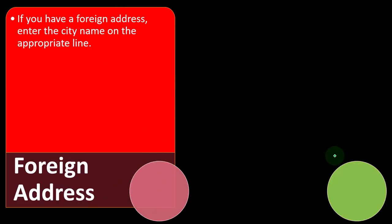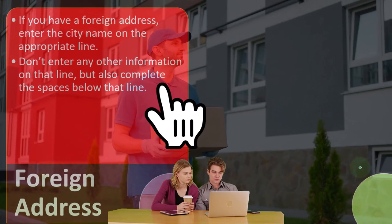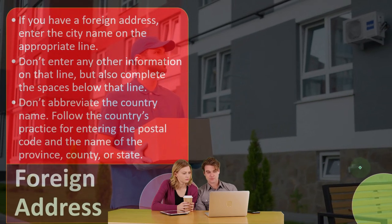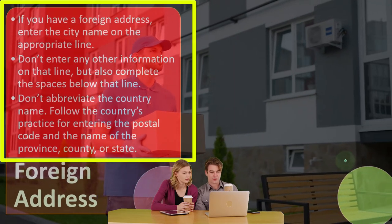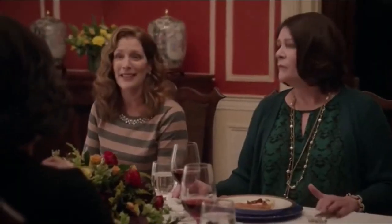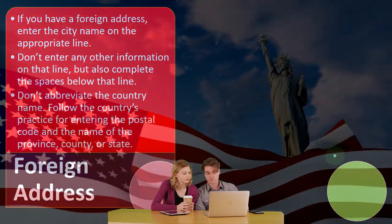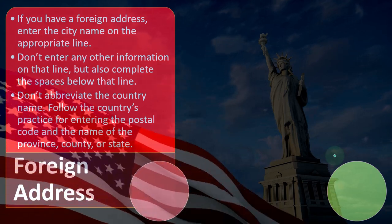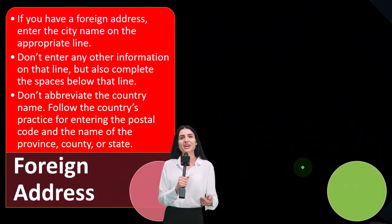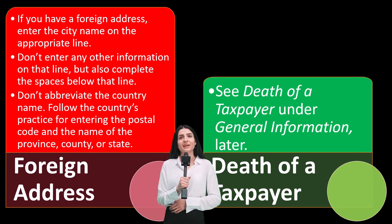Foreign address: enter the city name on the appropriate line. Don't enter any other information on that line, but also complete the spaces below it. Don't abbreviate the country's name. Follow the country's own practice for entering the postal code and the name of the province, county, or state, using whatever structure they have set up to identify where in the world you are.